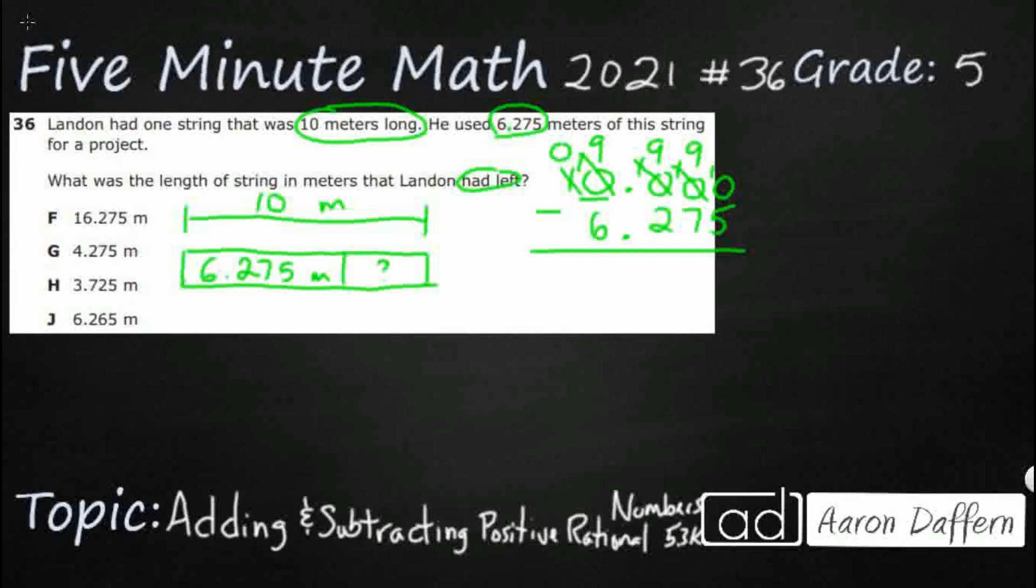But now, finally, we can start with this thousandths place. You always start at the far right. So 10 minus 5, that's going to get you 5. 9 minus 7, that's going to get you 2. 9 minus 2 is going to get you 7. Let's bring our decimal straight down. 9 minus 6 is going to be 3. It looks like we have 3.725, 3 and 725 thousandths. That's H.